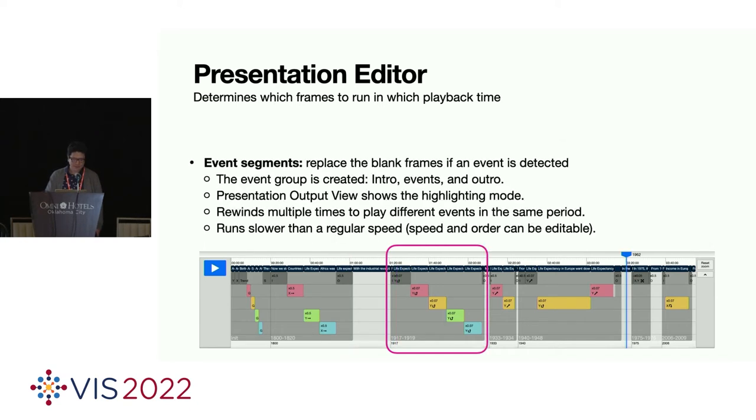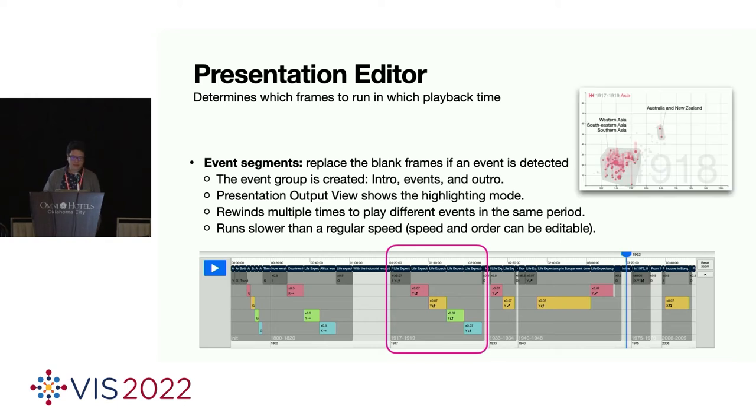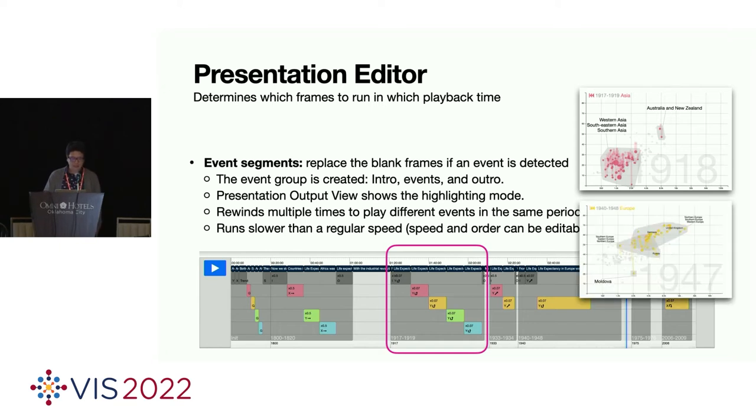And there are blank frames initially, which is automatically created. And each data snapshot is played for a unit time. And the presentation map view shows the default mode. And then we have detected algorithms. And we have event segments. And they replace the blank frames if an event is detected. For a group of events, we have event groups. One event group consists of intro, events, and outro.